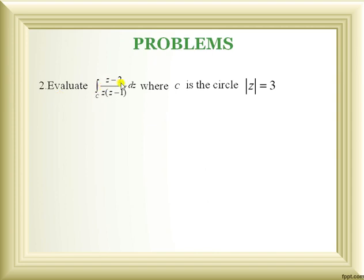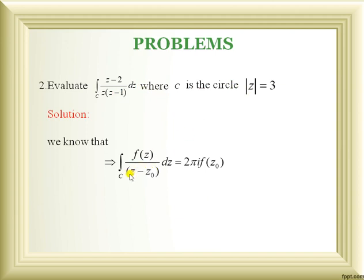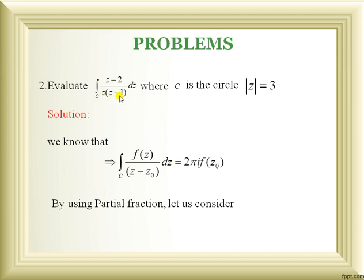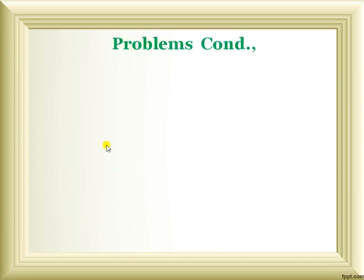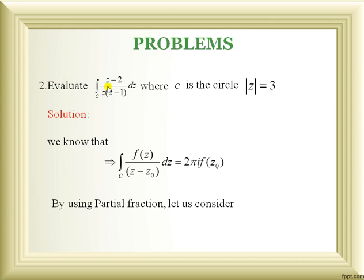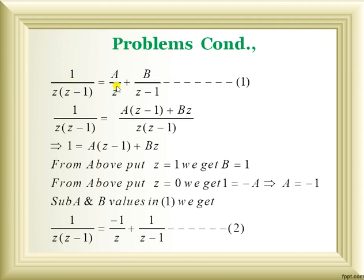Problem 2: Evaluate ∫_C (z − 2)/[z(z − 1)] dz where C is the circle |z| = 3. Since the denominator has more than one factor, we cannot directly apply Cauchy's formula. We use partial fractions: 1/[z(z−1)] = A/z + B/(z−1).